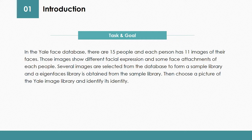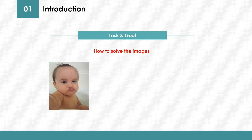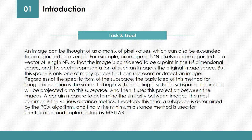In the Yale Face Database, there are 15 people, and each person has 11 images of their faces showing different facial expressions and some face attachments. The main task of my project is to select several images from the database, build a sample library, get an eigenface library from the sample library, and then randomly choose a picture from the Yale database to identify its identity. An image can be represented as a matrix of pixel values, like n×n, or as a vector of length n². To solve the image recognition problem, we find a suitable subspace and project all images onto it, then make distance measurements between images. The subspace is determined by the PCA algorithm, and finally we use a minimal distance method to identify identity.